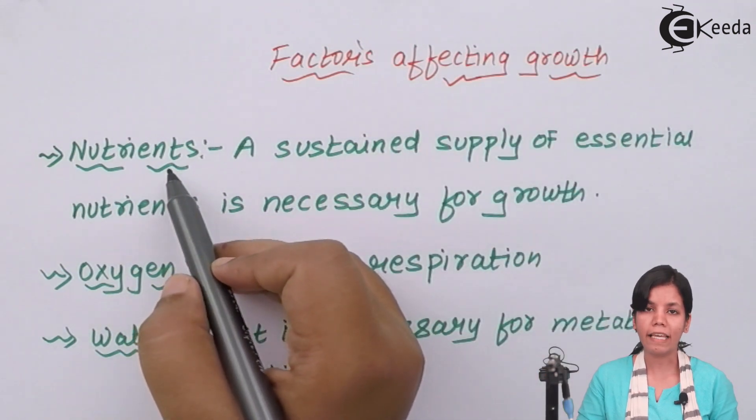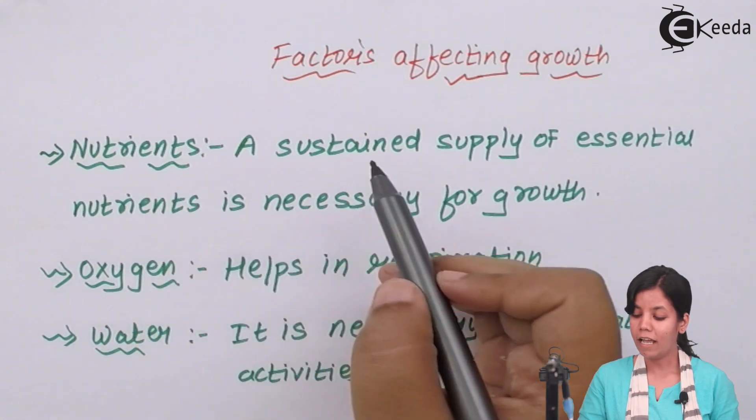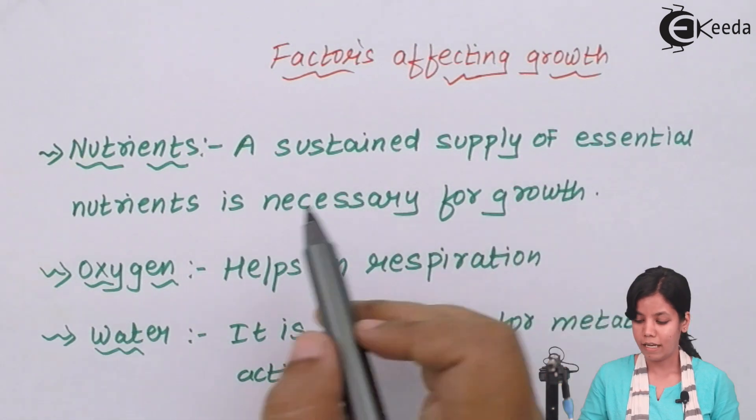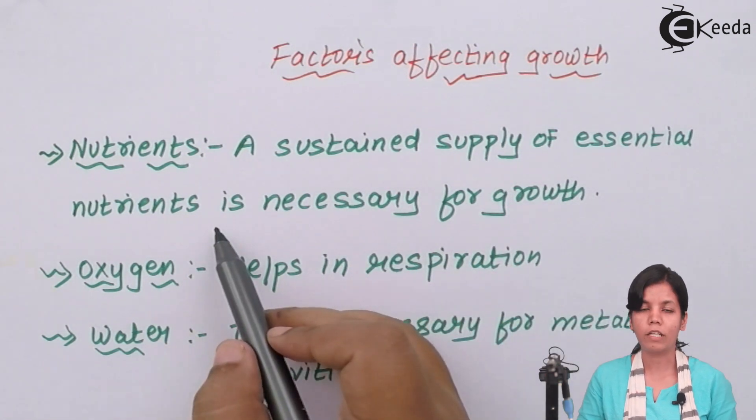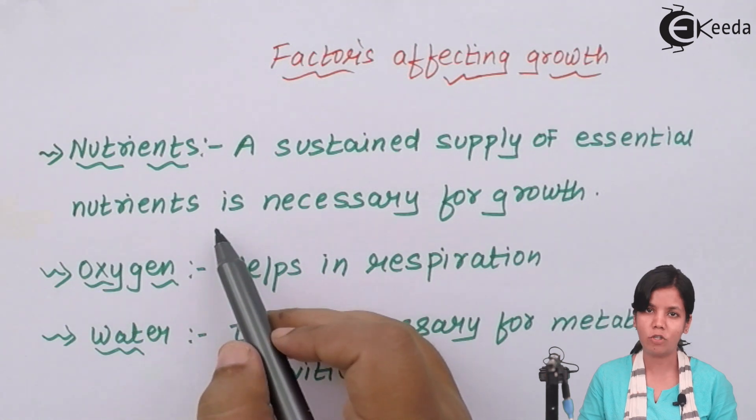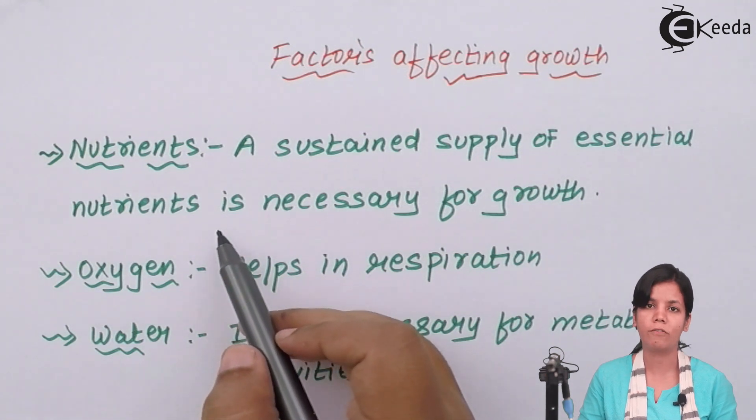Now plant for the growth get all the essential nutrients from soil whether it is minerals, nitrogen, sulfur, all of them. A sustained supply of essential nutrients is necessary for plant growth. Depending upon the plant, the nutrients may change but all plants need nutrients for their growth.